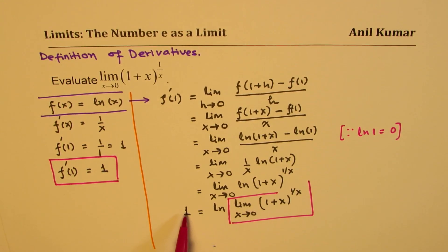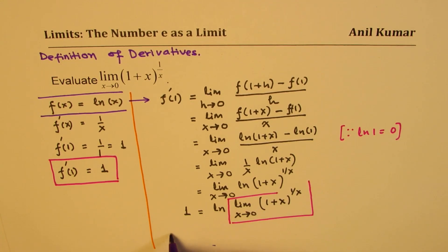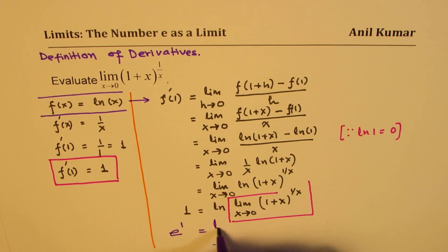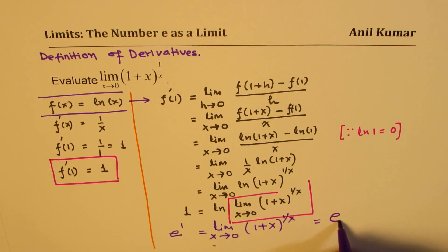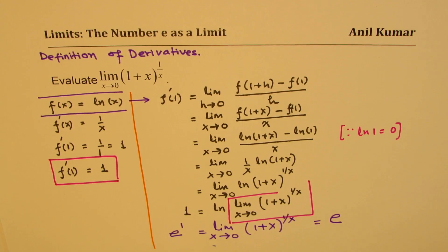This particular limit is e to the power of 1. From here, we get e to the power of 1 equals the limit x approaches 0 of (1 plus x) to the power of 1 over x. So that means this limit is e. Using the definition of derivatives, we have shown that the limit of this particular function as x approaches 0 is e.